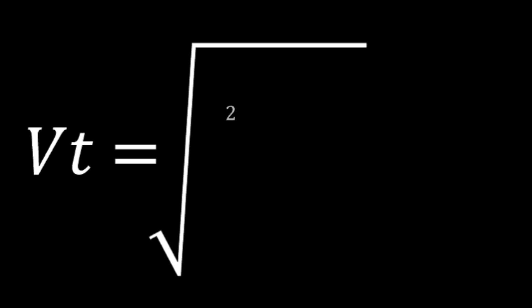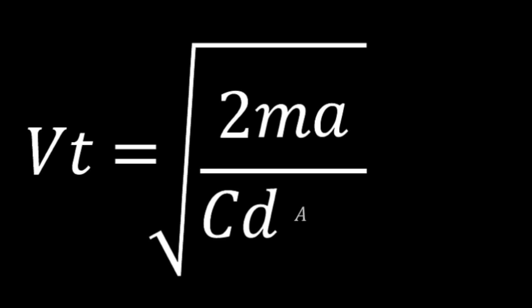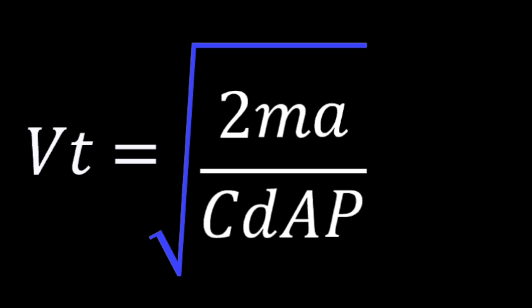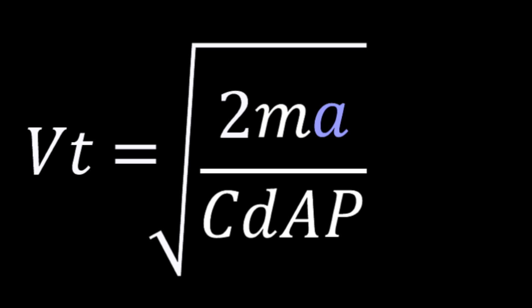The equation for terminal velocity is vt equals the square root of 2ma divided by cdap. Let's break it down: terminal velocity equals the square root of 2 times the mass times acceleration, divided by the drag coefficient times the area of the object and the density of the fluid. This means terminal velocity is proportional to the square root of acceleration divided by drag.